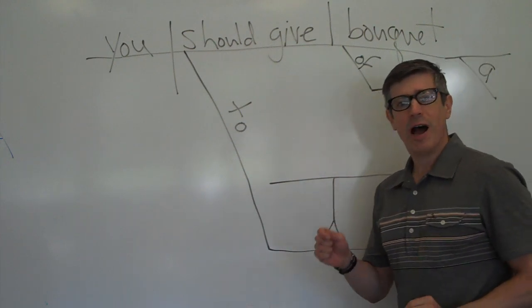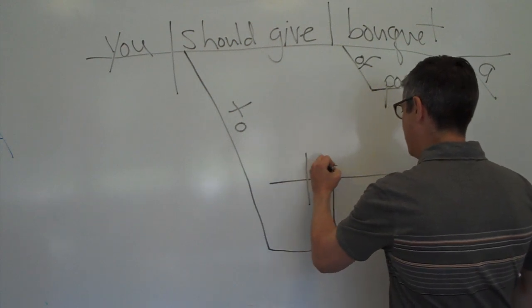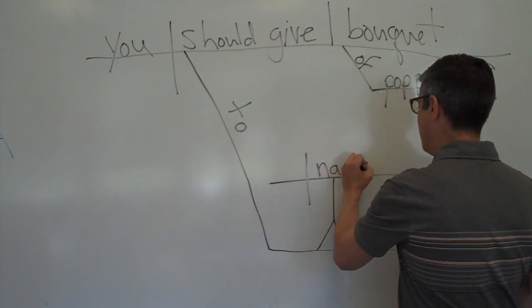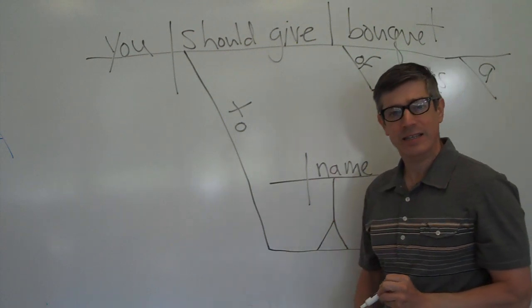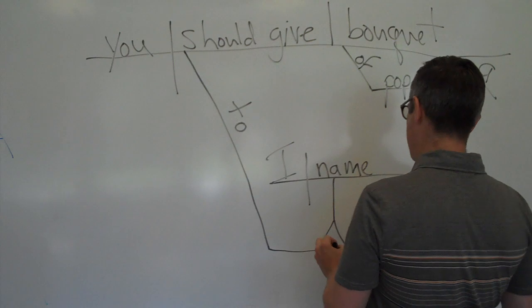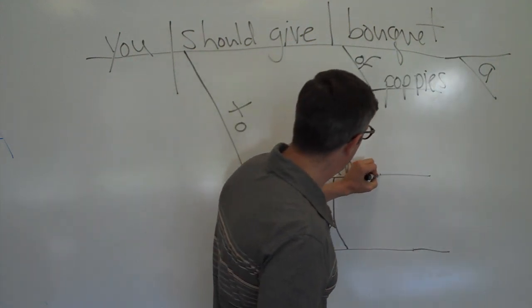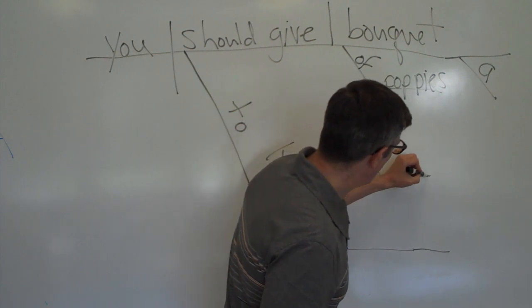Now whomever I name next, the verb is name. Well who's doing that naming? It's I, so I name, and who is being named? I name what? What's the direct object? Well that's our whomever.